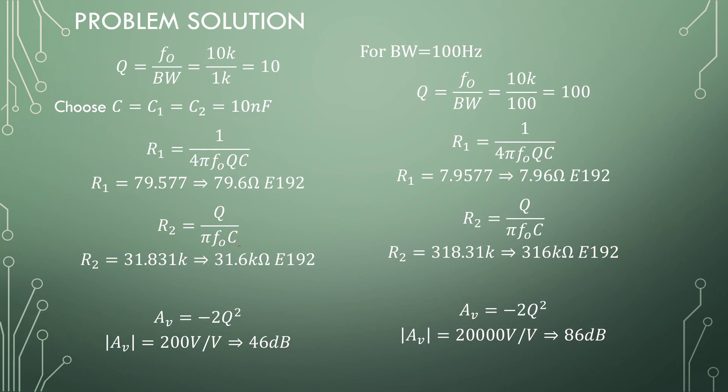The solution is as follows. Center frequency divided by bandwidth gives us a Q factor of 10. For the second one, we can do these side by side. The Q factor is 100 for the 100 Hz bandwidth.